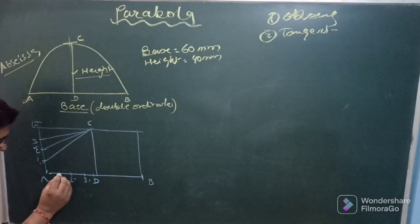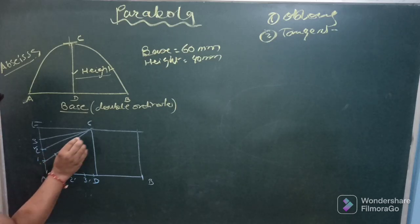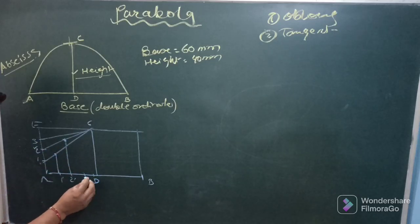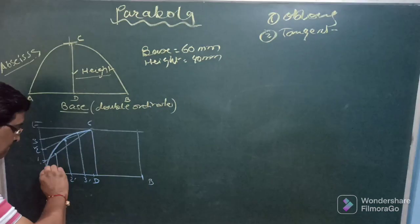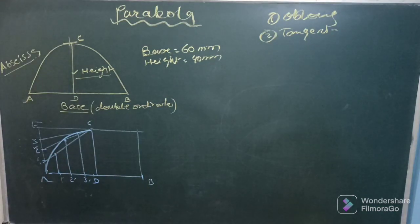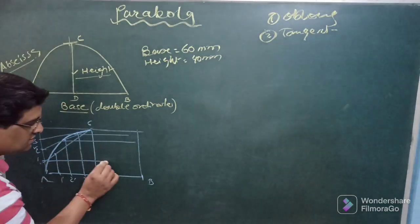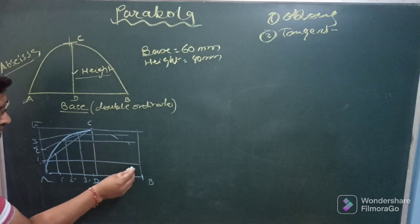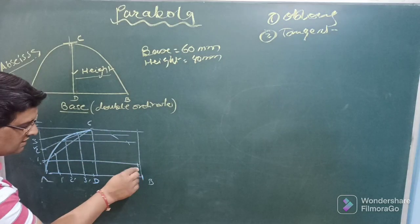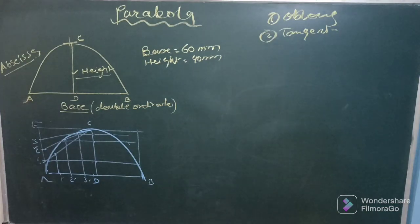Then in that process we joined these points one dash two dash and three dash with D here and then extend it. But in this case just draw the vertical lines here so as to cut the respective lines. So vertical line from one dash will cut C1, vertical line from two dash will cut C2 and from three dash it will cut C3. So that half of the parabola will be obtained. The other half may be drawn using the offset method by transferring the dimensions from here. Take this distance, mark this side. Take this distance, mark this side, so that the other half may also be completed.